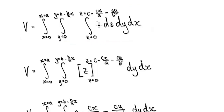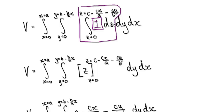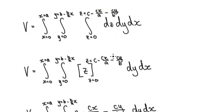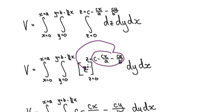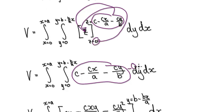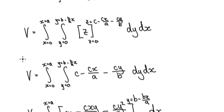Remember there's a one inside the integral, but we don't bother writing it. Looking at the inner integral, we integrate with respect to z. Integrating one gives just z, evaluated from zero to the plane expression. Substituting the upper limit gives that expression, and putting in zero gives nothing, so we move forward with that result.